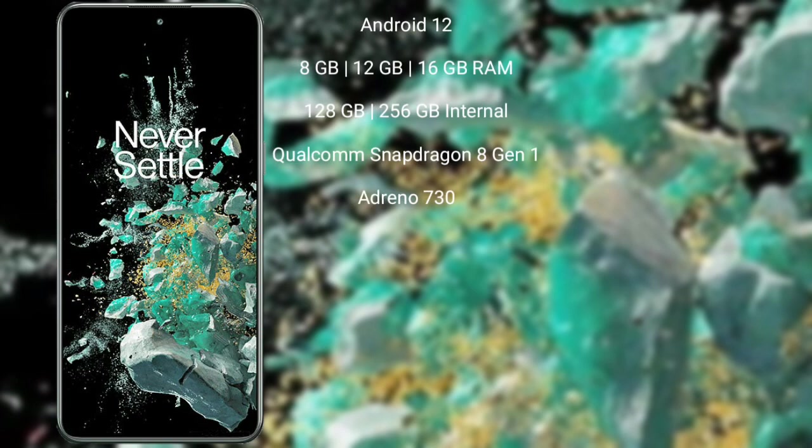OnePlus 10T runs on the Android 12 operating system. It comes with 8GB, 12GB, and 16GB RAM, and 128GB and 256GB internal storage, with a Qualcomm Snapdragon 8 Gen 1 processor and Adreno 730 GPU.